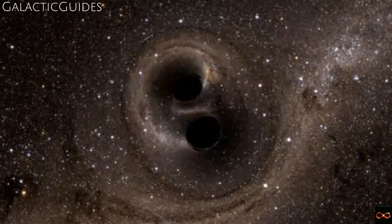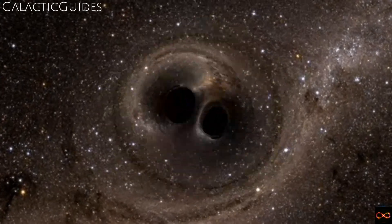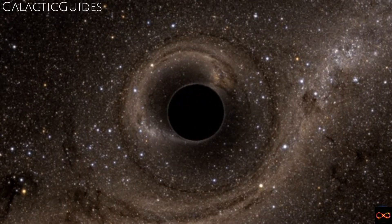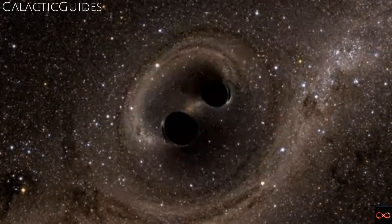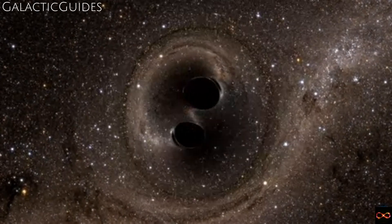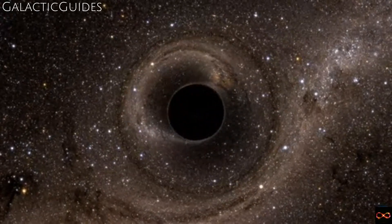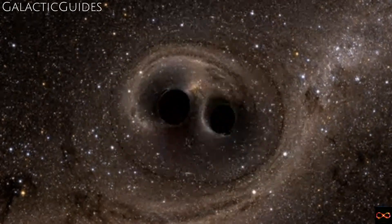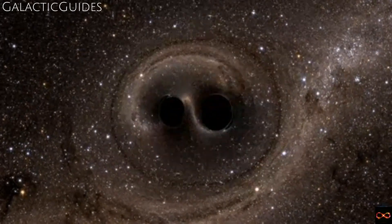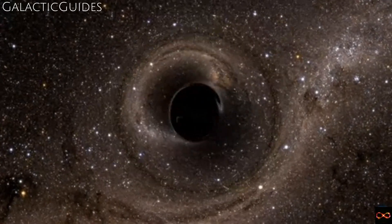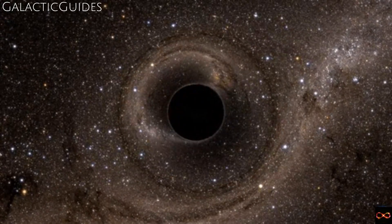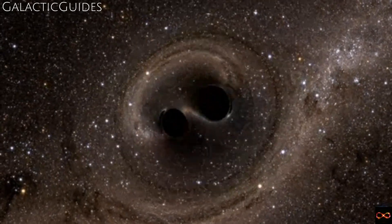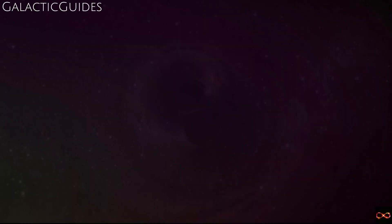Black holes also challenge our understanding of the universe in other ways. For instance, they defy the laws of thermodynamics, according to which nothing can be completely black, but must emit some sort of radiation. Yet black holes, by definition, absorb all radiation and reflect none. This paradox led physicist Stephen Hawking to propose the existence of Hawking radiation, a theoretical prediction that black holes do emit particles, although detecting this radiation remains a challenge for modern astrophysics.